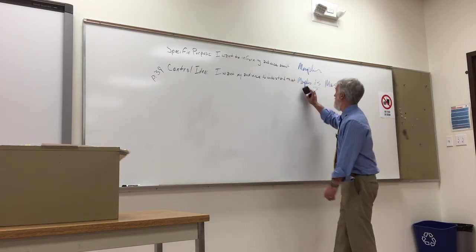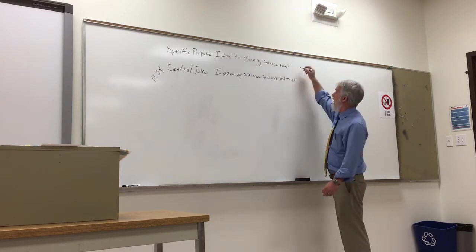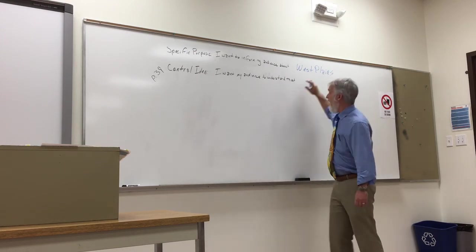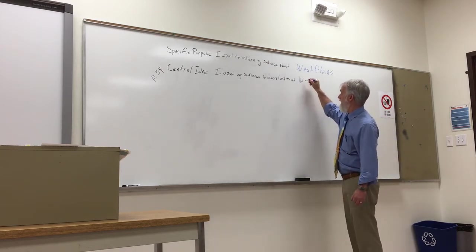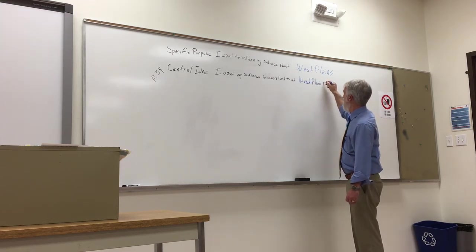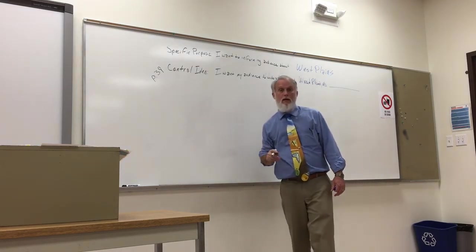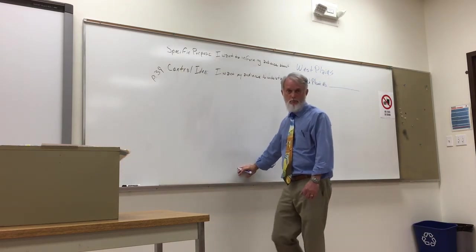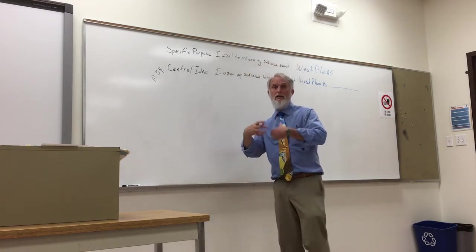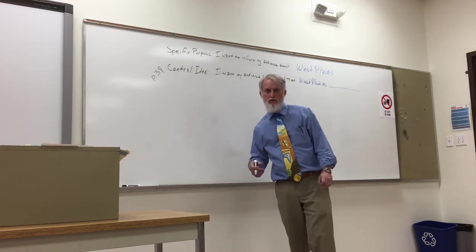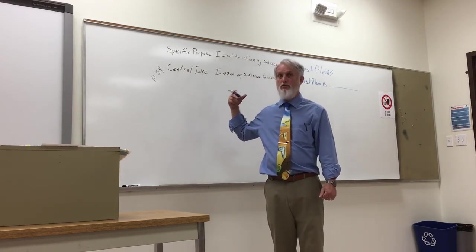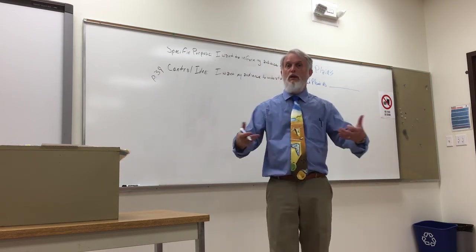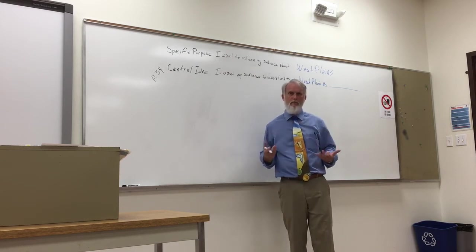Now let's say you're doing a speech and you grew up here. Specific purpose: 'I want to inform my audience about West Plains.' The central idea determines your main points. If the central idea is 'West Plains is a great place to have lunch,' then your three main points are going to be places you like to eat lunch. If you want your audience to understand that West Plains is a historic town, you're going to take them to historic locations like the historic city square, the battlefield where a Civil War battle was, a cemetery with old graves, and historic monuments or markers.